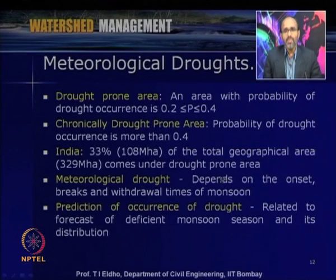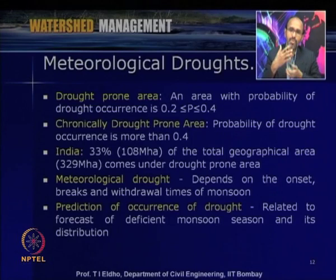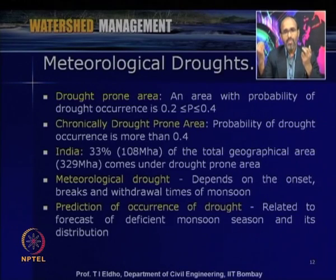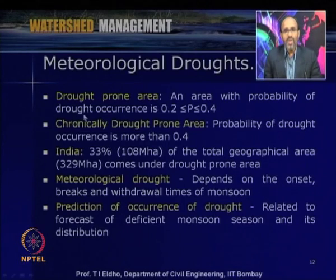Areas like Rajasthan and Gujarat Kutch region are chronic drought-prone areas, while some parts of Maharashtra, Bihar, or Madhya Pradesh are simply drought-prone areas. Meteorological drought depends on the onset, breaks, and withdrawal times of monsoon. IMD generally predicts rainfall conditions about one month before the monsoon and assesses drought situations with respect to data from various locations of the country. Prediction of drought occurrence is related to forecasting a deficient monsoon season and its distribution.